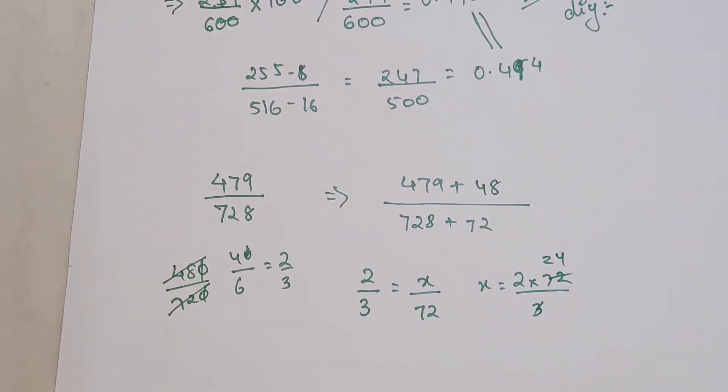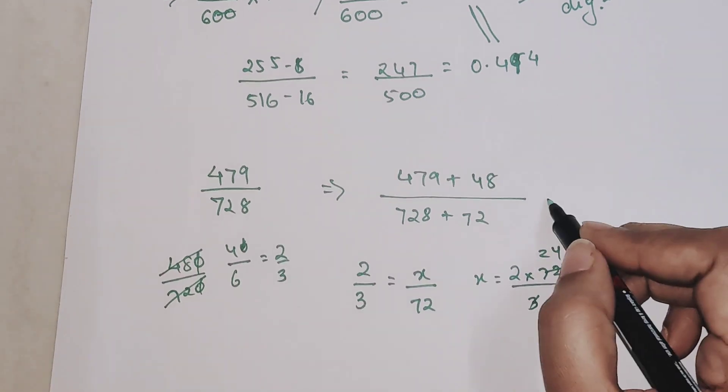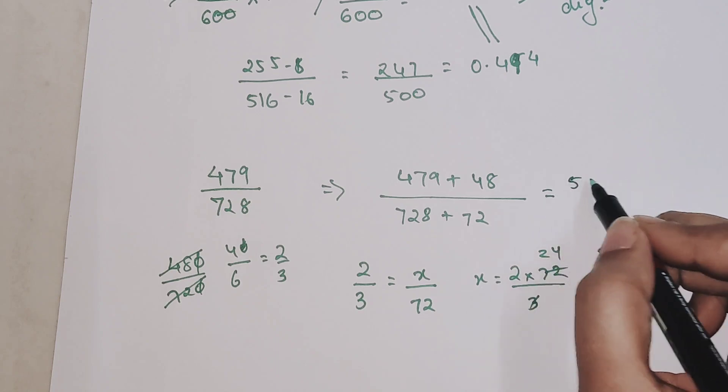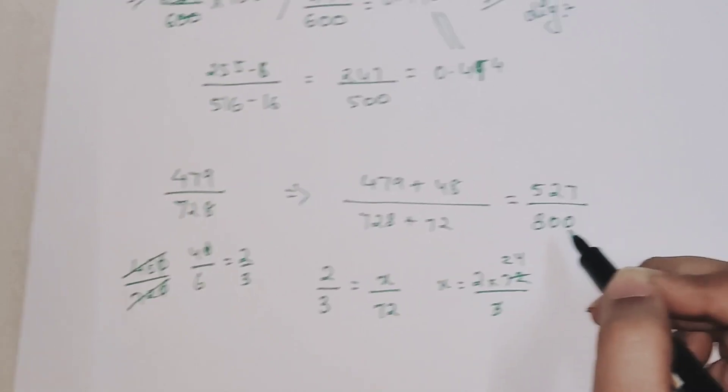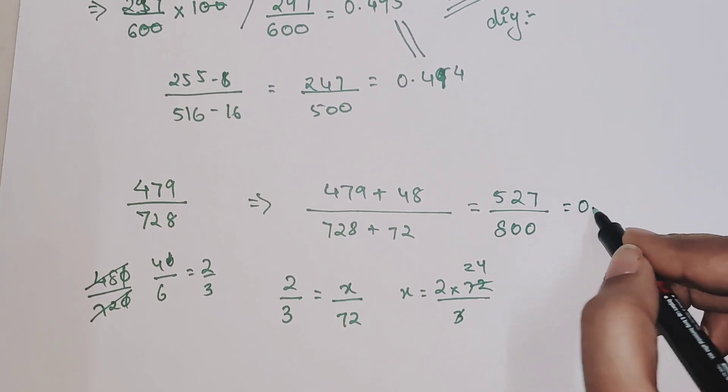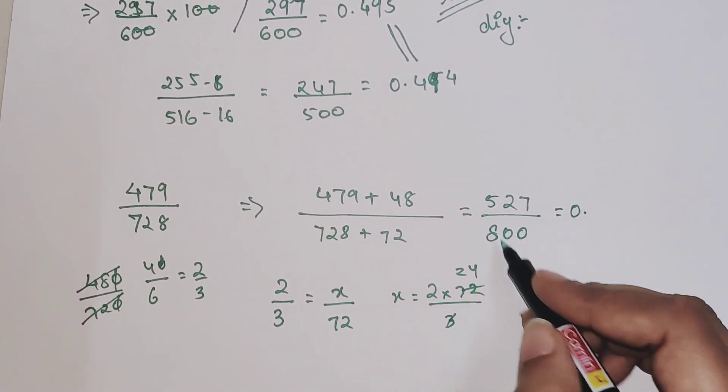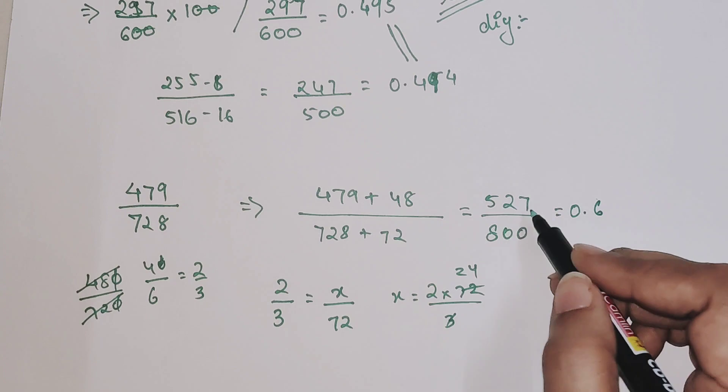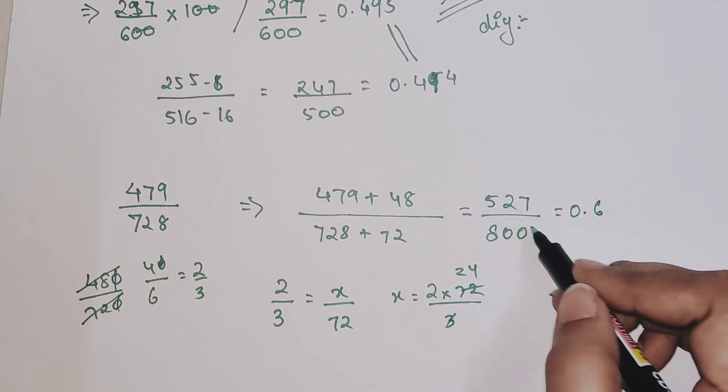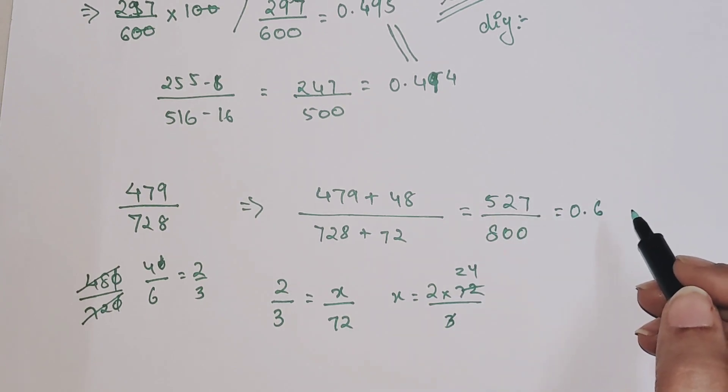We are adding 479 and 48, this is coming out to be 527/800. So your final answer will now become 0.point.